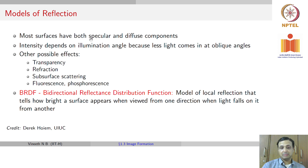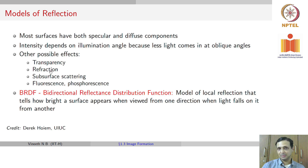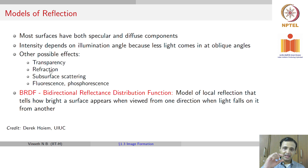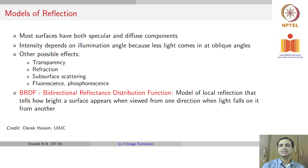There is transparency, where light could pass through the surface. There is refraction, such as a prism, where light could get refracted. There is also subsurface scattering, where multiple layers of the surface could result in certain levels of scattering. And finally, there are also phenomena such as fluorescence, where the output wavelength could be different from the input wavelength, or other phenomena such as phosphorescence.